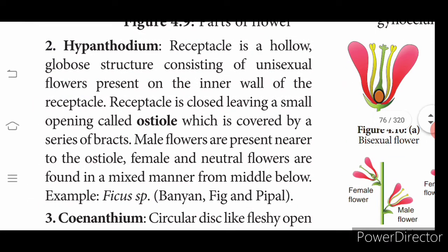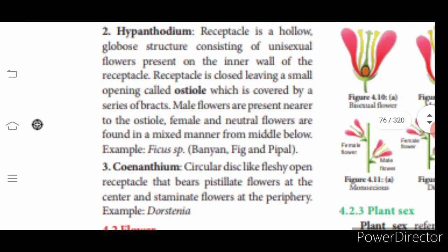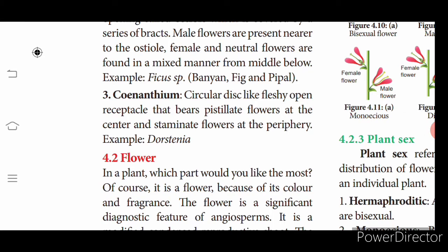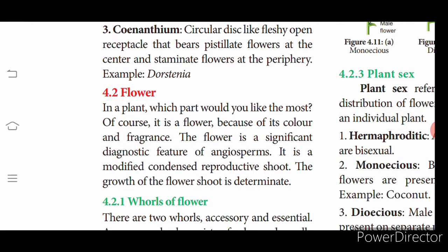Hypanthodium is a hollow globose structure with unisexual flowers present on the inner side of the receptacle. The receptacle is closed, leaving a small opening called the ostiole, covered by bracts. Male flowers are present near the ostiole where insects enter; neutral and female flowers are present in the middle and lower regions. Synanthium is a circular disc-like fleshy open receptacle bearing bisexual flowers at the center and staminate flowers at the periphery.